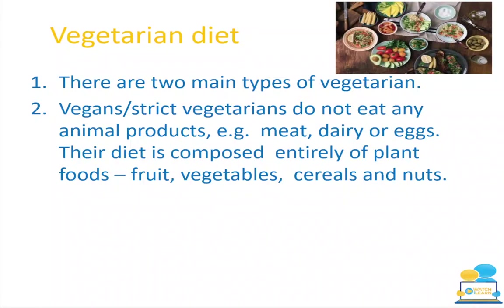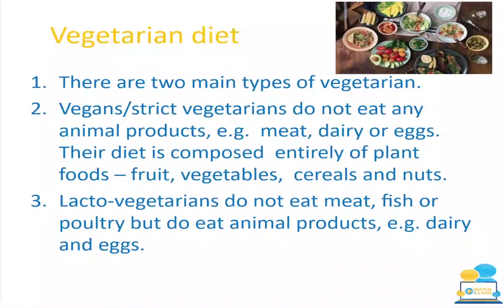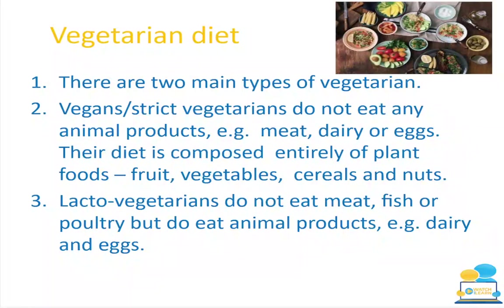It's important to distinguish between vegetarianism and veganism. Lacto-vegetarians do not eat meat, fish or poultry. However, they do eat some animal products — dairy and eggs. The word 'lacto' comes from 'lactose,' which is the sugar found in milk. That's how I get students to remember it — lacto means they do eat dairy and eggs.